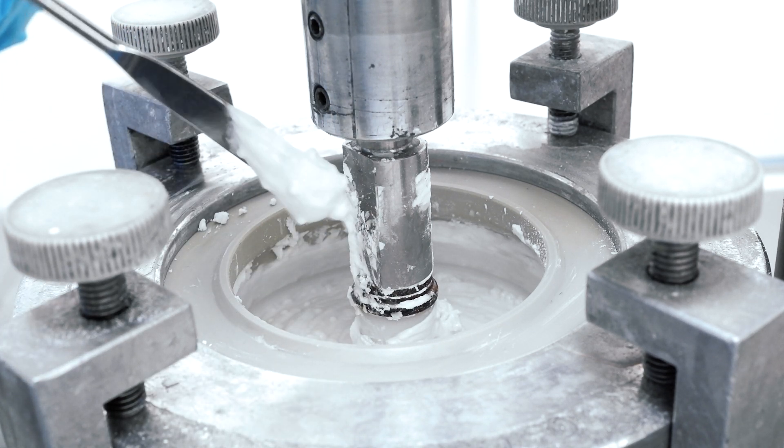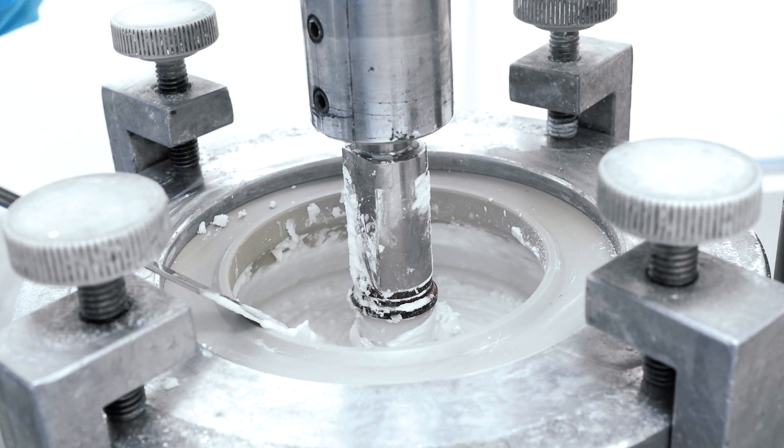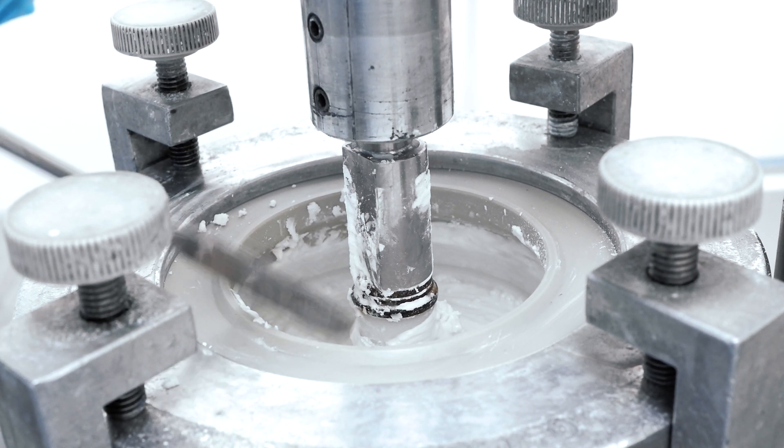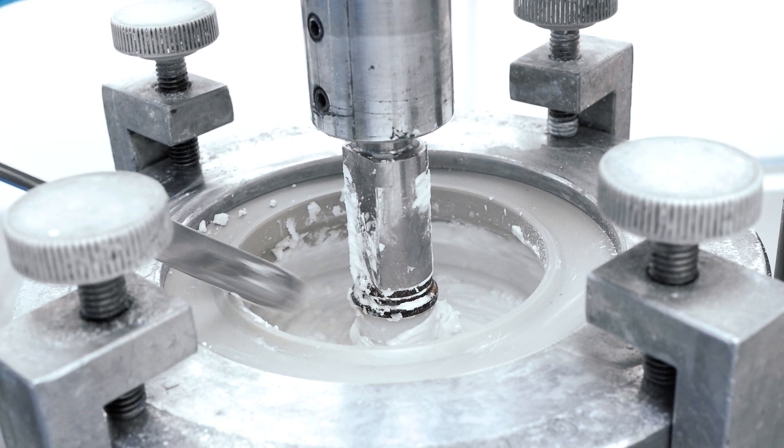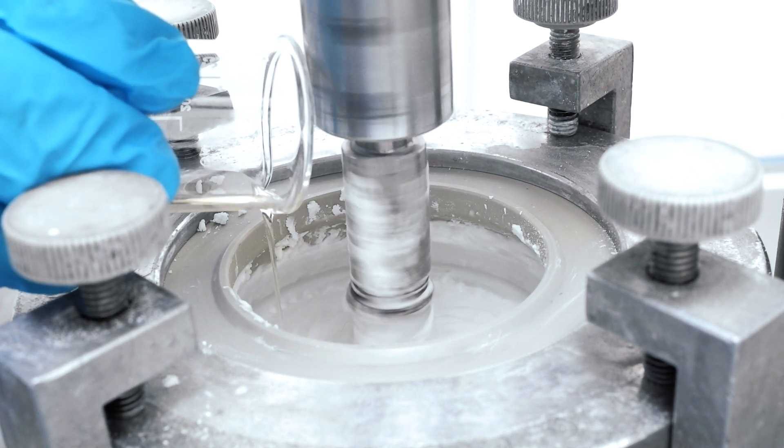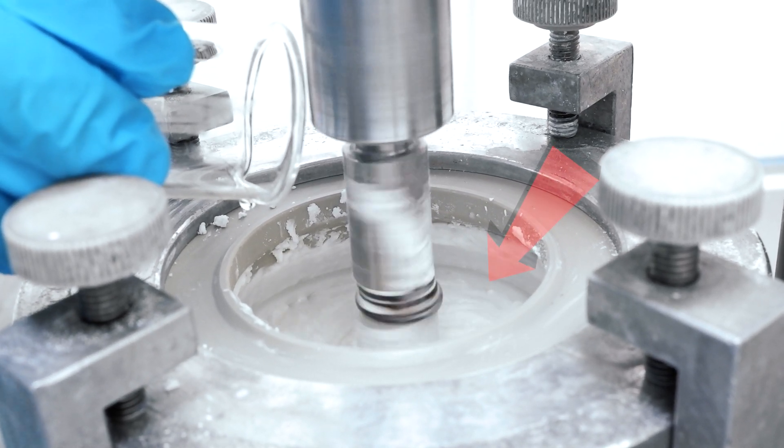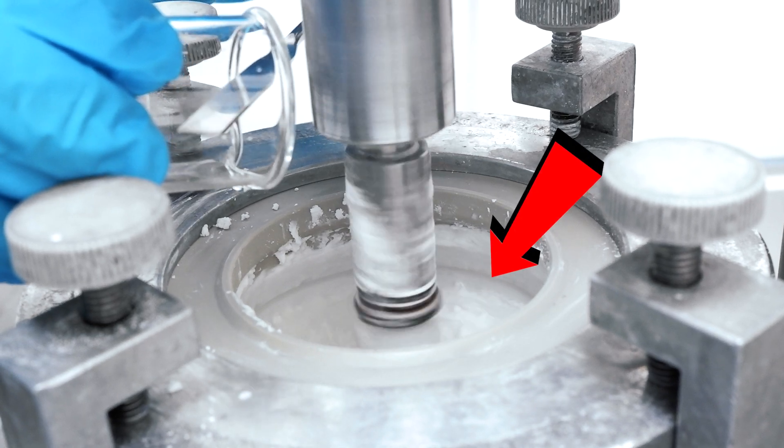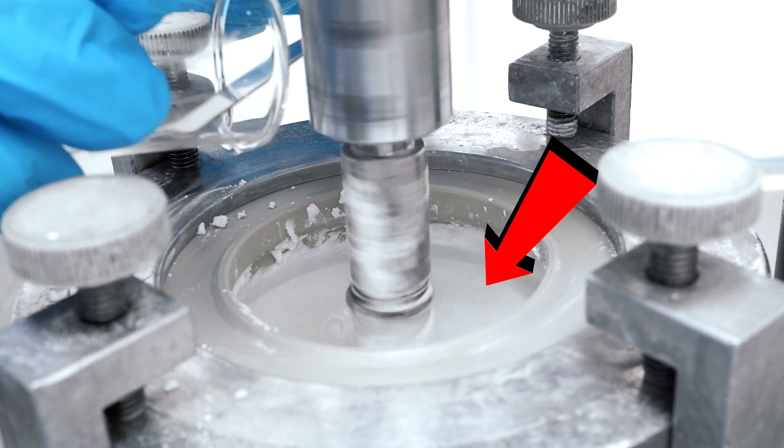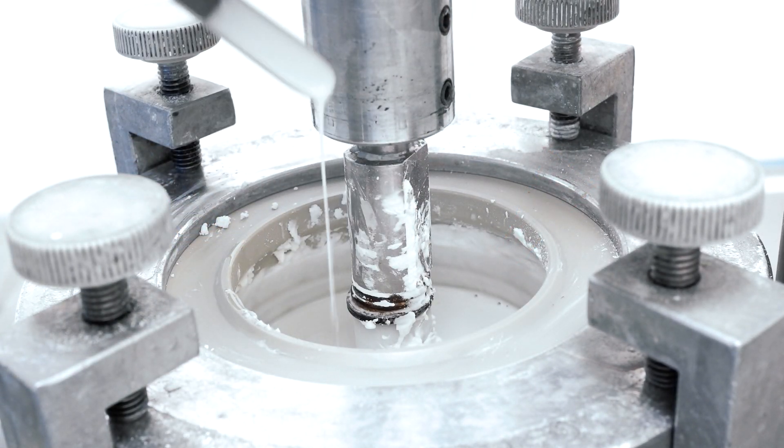Before adding any additives, the resin is so thick that it looks almost like a gel. Well, needless to say, this resin will not flow, and it cannot be printed. Now, if we add a tiny amount of the correct additive, notice how the viscosity drops tremendously in a fraction of seconds. And now this resin flows, and it can be printed. Cool, right?